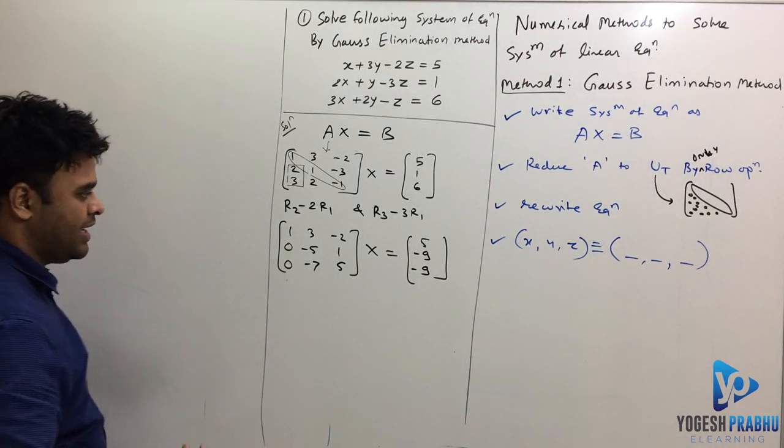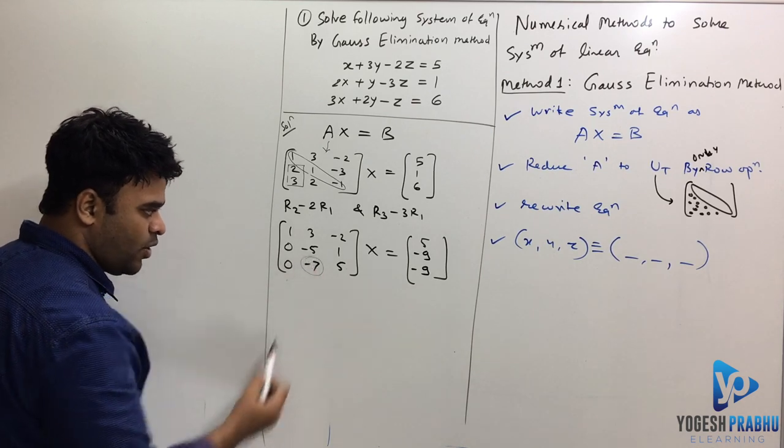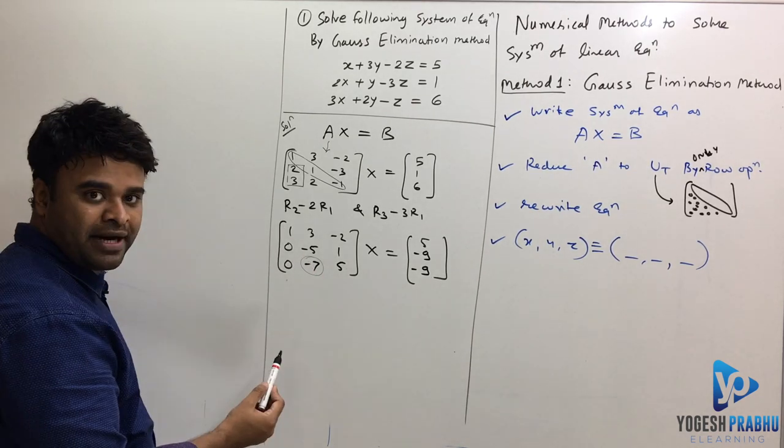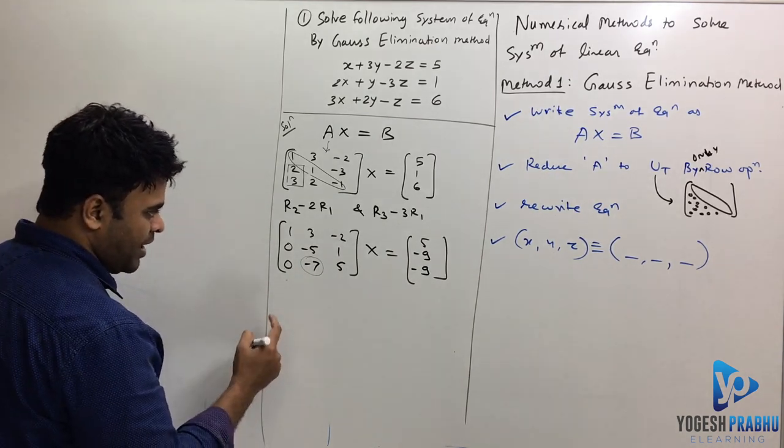So once you find like that, all I want to do is I just want to make this 0. My focus is just to convert this matrix into upper triangular matrix. That way, if I have to make this 0,